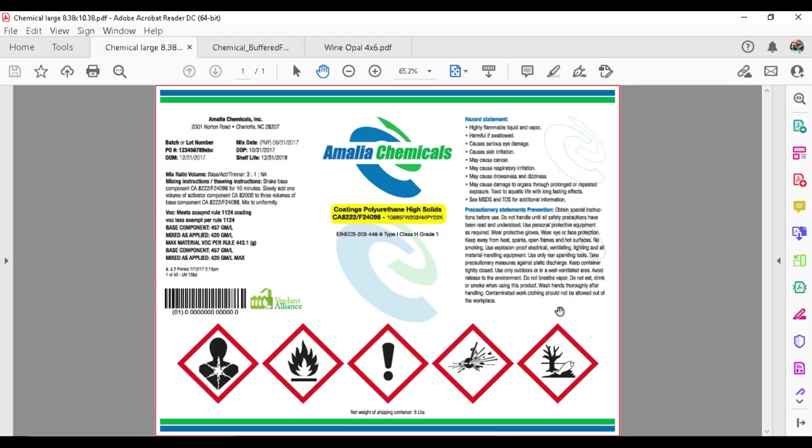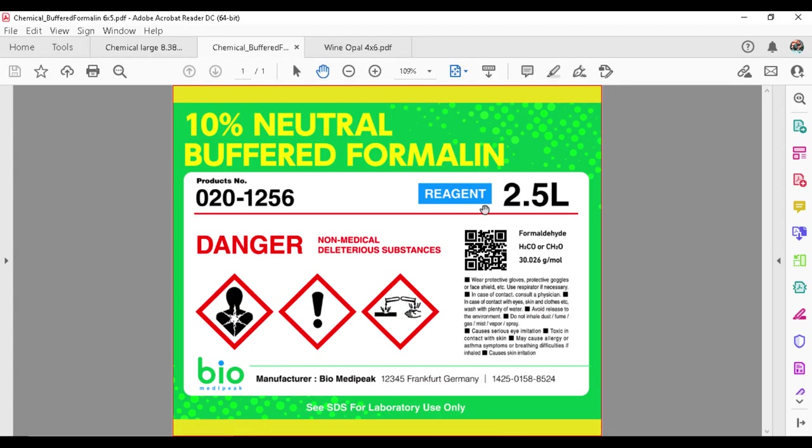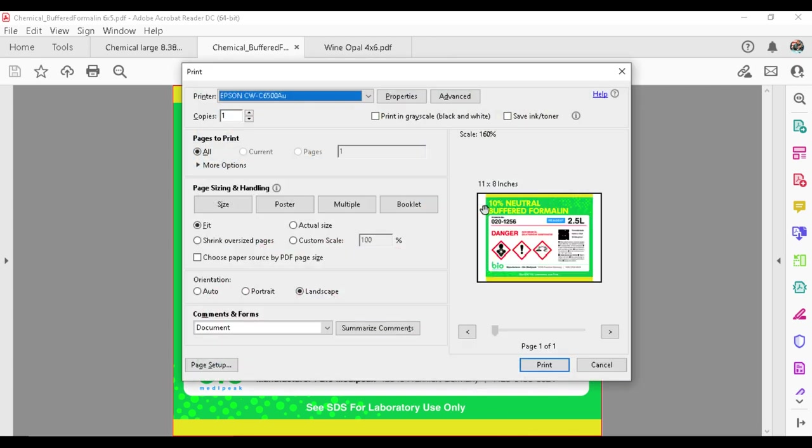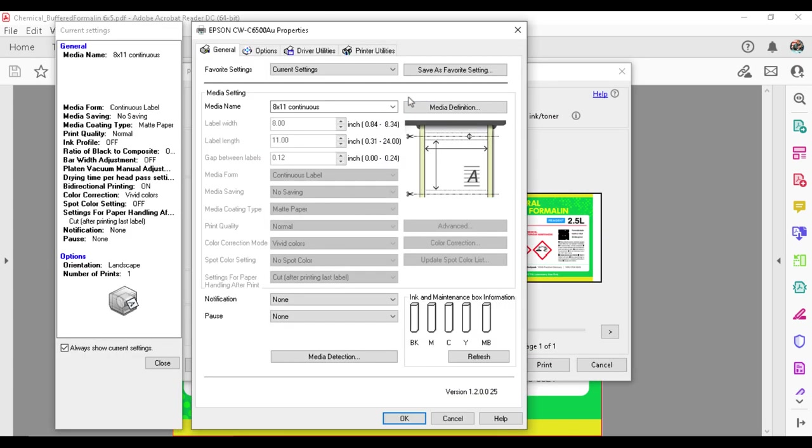And the next label we're going to talk about here is another chemical label. But we're going to print this one on eight inch material. But we're going to change the orientation. So it's eight by five and a half. So you could see here, the continuous label is still chosen, matte paper, all my settings.